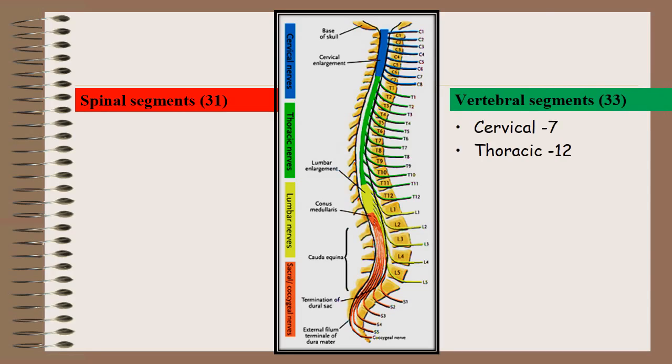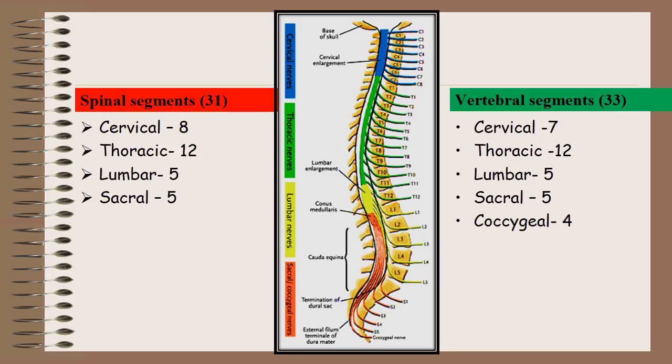There are 7 cervical, 12 thoracic, 5 lumbar, 5 sacral and 4 coccygeal vertebrae. And there are 8 cervical, 12 thoracic, 5 lumbar, 5 sacral and 1 coccygeal spinal segment.